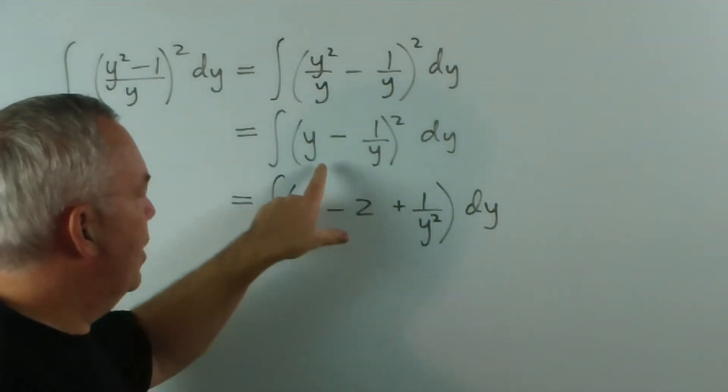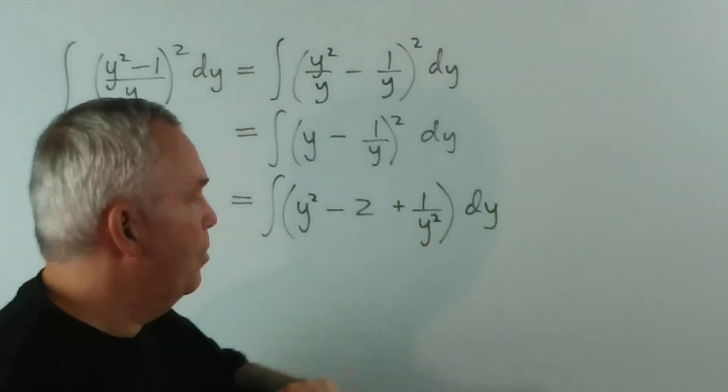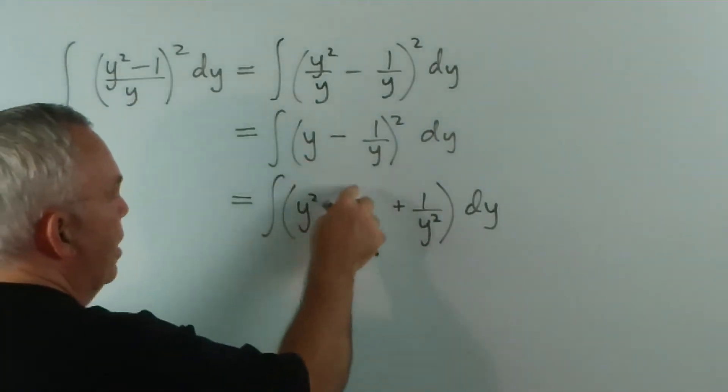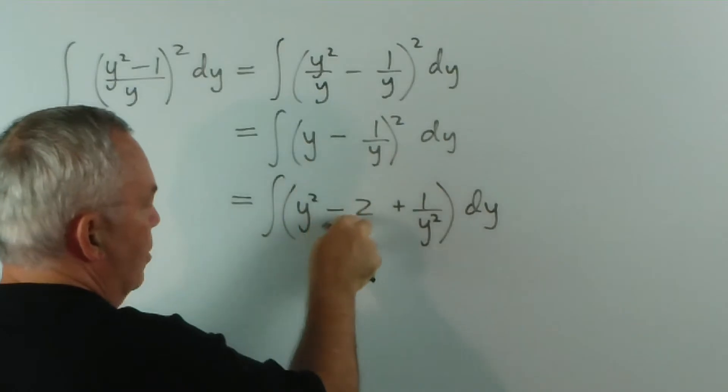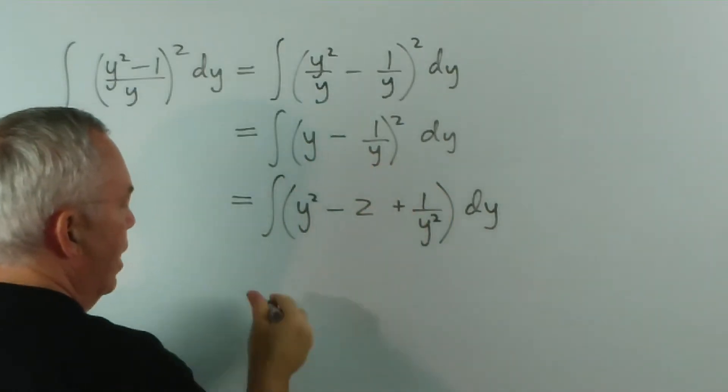If you want to confirm that, do this on the side of the page, multiply it out, and you'll find you get y squared. Twice the product will give minus 2 and the square will give that.